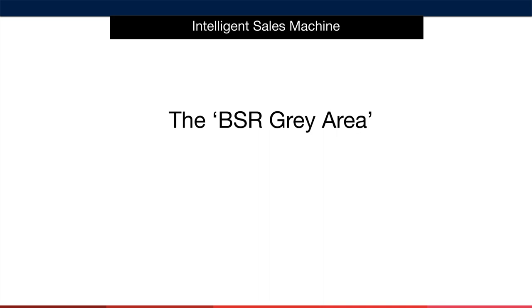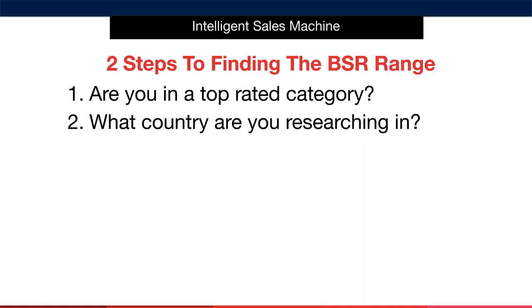You may be wondering what the BSR gray area is. In simple terms, when we talk about BSRs, we're always asked: what is an acceptable BSR in every category on Amazon in each country? This is a difficult question to answer as there are so many variables in play, as well as the fact that more and more items are becoming available on Amazon all the time. I intend to show you how to determine whether an item is worth researching further by giving you a method for calculating an acceptable BSR in every category in every country.